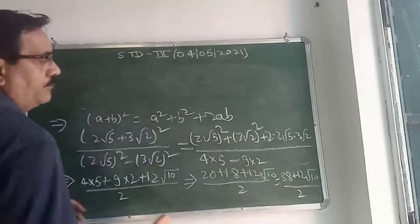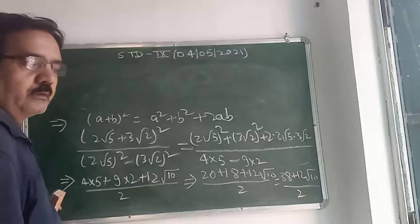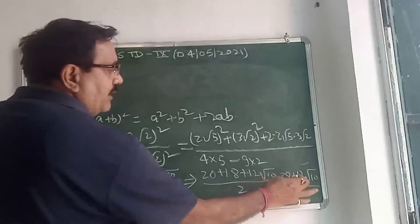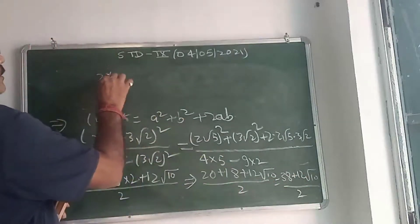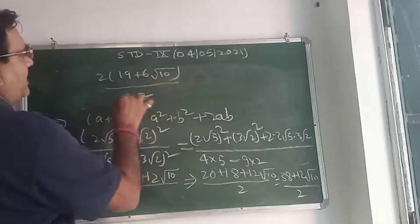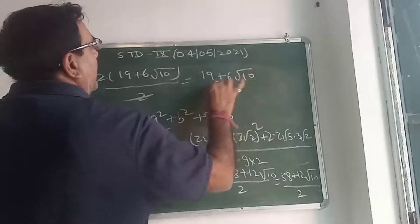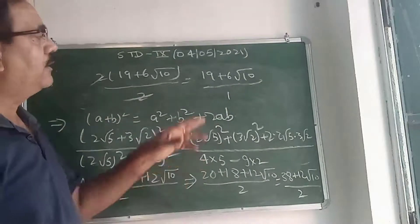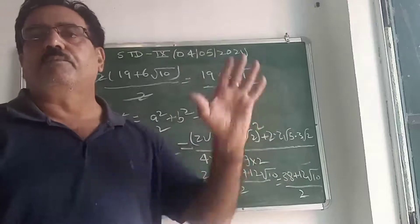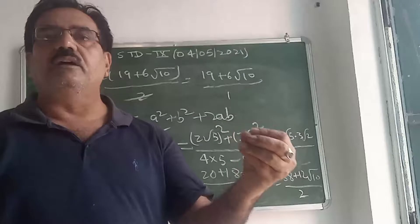Now, take the common factor. When there is a plus sign, you cannot directly cancel — you must take out the common factor first. Here 2 is common, so we get 2(19 + 6√10) / 2, and the 2 cancels. The final result is 19 + 6√10. The denominator has been converted into the rational number 1. This type of question generally comes in the examination.